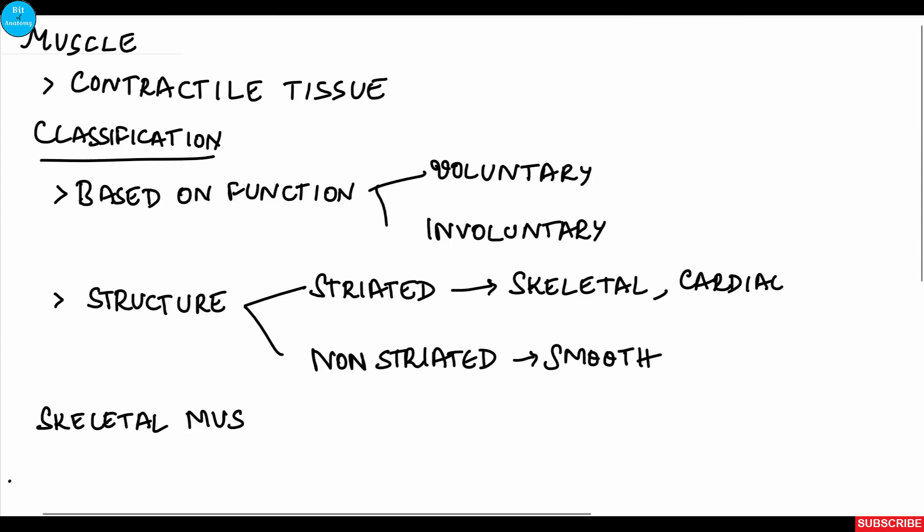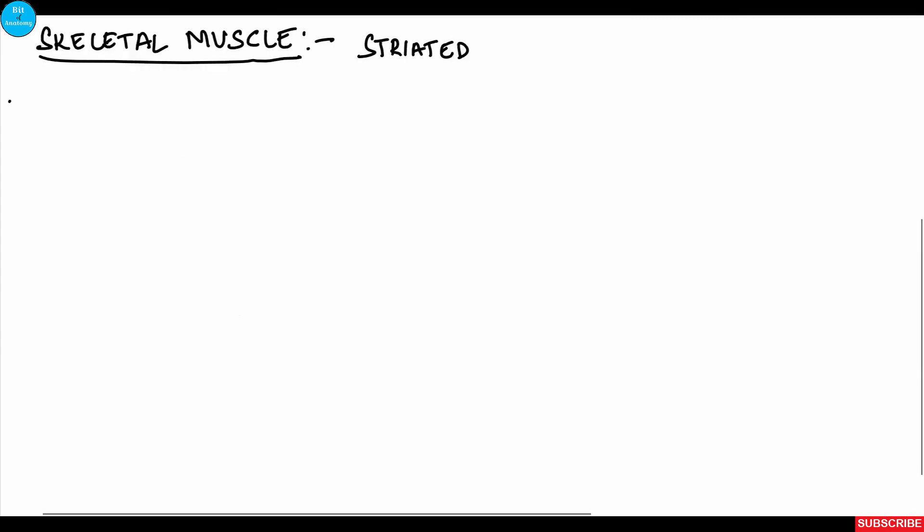The features of skeletal muscle: it is striated and voluntary. There are some exceptions like the diaphragm and the muscles of the eyelid, where it is partially voluntary.